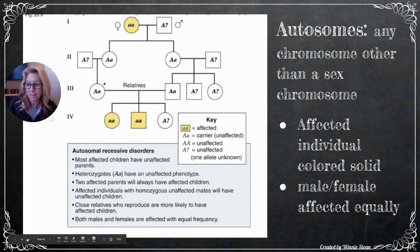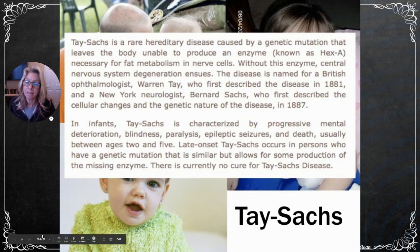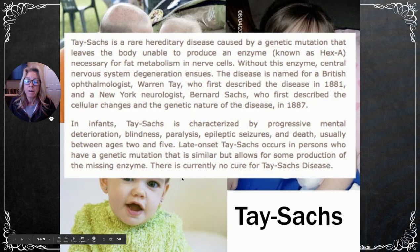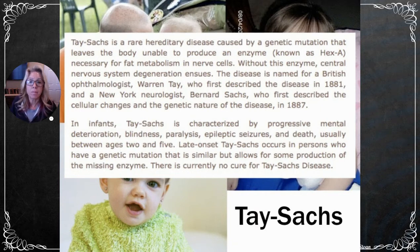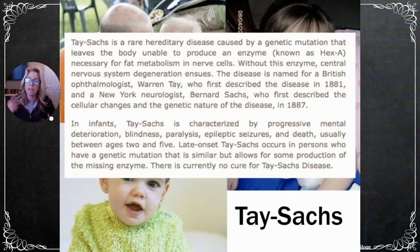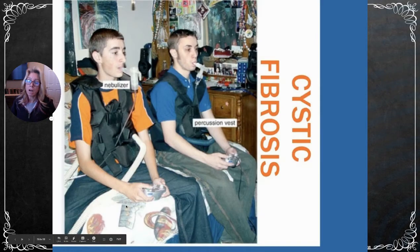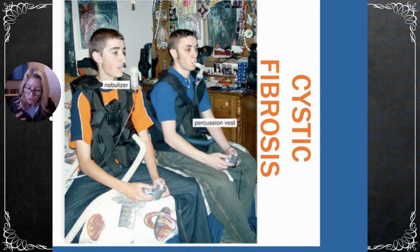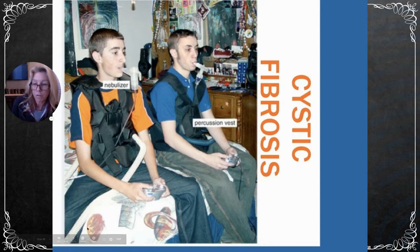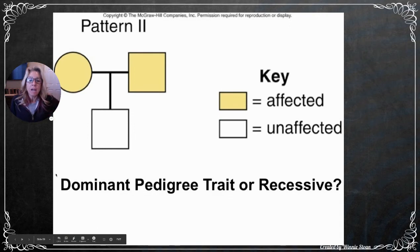Two examples of autosomal recessive diseases: Tay-Sachs disease — children are born normally but develop symptoms within the first three to four years. They lack an enzyme needed for fat metabolism in nerve cells, leading to progressive mental deterioration, blindness, paralysis, seizures, and hair loss. Most live only two to five years. Another example is cystic fibrosis. Key rule: two affected parents will always have affected children.